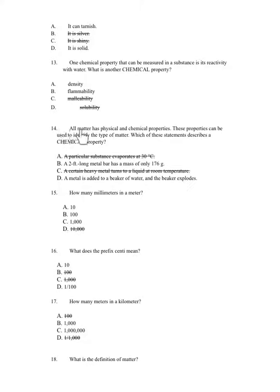Number 14. All matter has physical and chemical properties. These properties can be used to identify the type of matter. Which of these statements describes a chemical property? A. A particular substance evaporates at 30 degrees C. B. A two foot long metal bar has a mass of only 176 grams. C. A certain heavy metal turns to liquid at room temperature. D. A metal is added to a beaker of water and the beaker explodes.